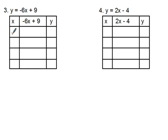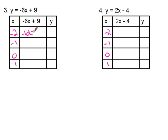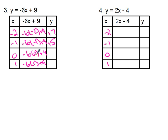Welcome back. I'll use negative two, negative one, zero, and one for x. For the first equation, substituting in: negative six times negative two is twelve plus nine is twenty-one; negative six times negative one is six plus nine is fifteen; negative six times zero is zero plus nine is nine; and negative six times one is negative six plus nine is three.